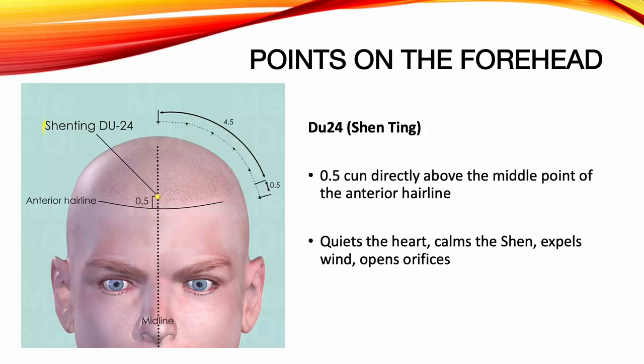Du 24, San Ting. Location: 0.5 Sun directly above the middle point of the anterior hairline. Functions: quiets the heart, calms the shen, expels wind, opens orifices. Indications: headache, dizziness, anxiety, insomnia, tearing of the eyes, nasal congestion, sore throat, seizures, convulsions in children.